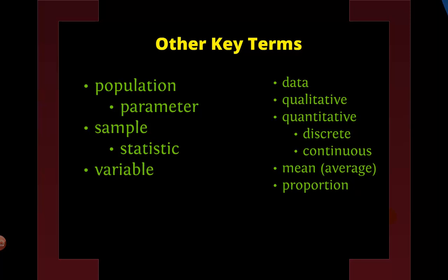Whereas quantitative is numerical, it has to be numerical, it's a measure. Now we have two types of quantities. We have discrete, which are things that we can count, and we have continuous, which are things that are measured.